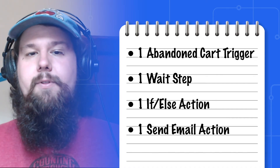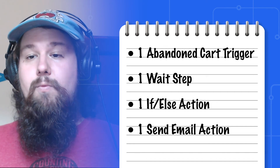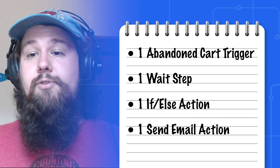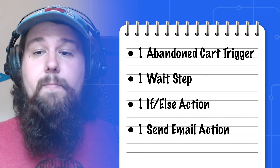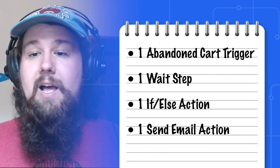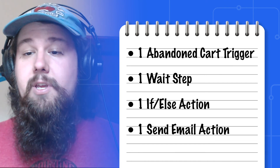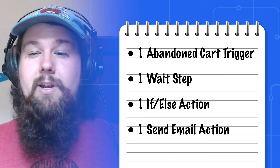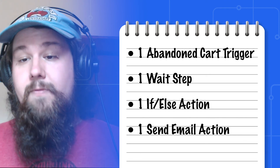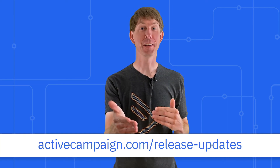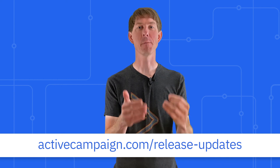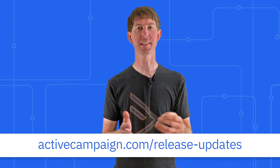So what ingredients are we putting in this automation recipe? We're just grabbing four simple things: an abandoned cart trigger — or if you're not using our Shopify or WooCommerce integration, you can use site tracking to track a checkout page or look at a third party like Zapier. Then a customizable wait step, an if/else action checking if the cart has been recovered — if you're not using Shopify or WooCommerce, you can use the order complete page URL — and then the send email action, the 'hey, you forgot this' message. Four simple ingredients that can make a big difference in your business. Thank you, Cody, for showing us the abandoned cart automation. You can always find a complete list of all our product updates at activecampaign.com/release-updates. Thanks for joining me today, I'll see you next time.